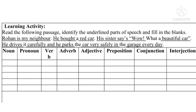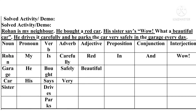Let's read and identify the part of speech of the given words. In the underlined words, nouns are: Rohan, garage, car, sister. Pronouns are: my, he, his. Verbs are: is, bought, says, drives, parks. Adverbs are: carefully, safely, very.